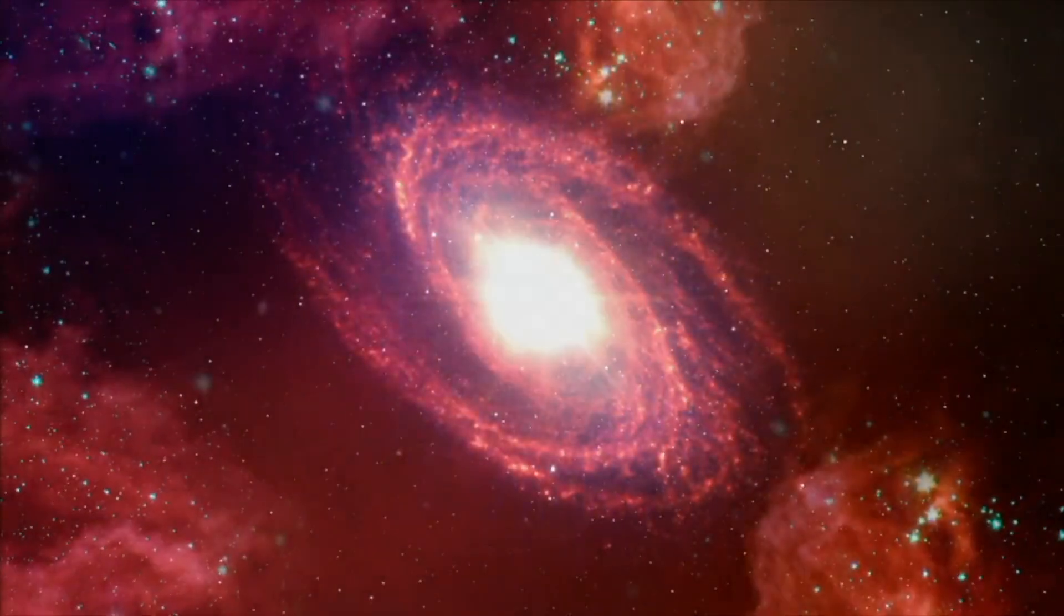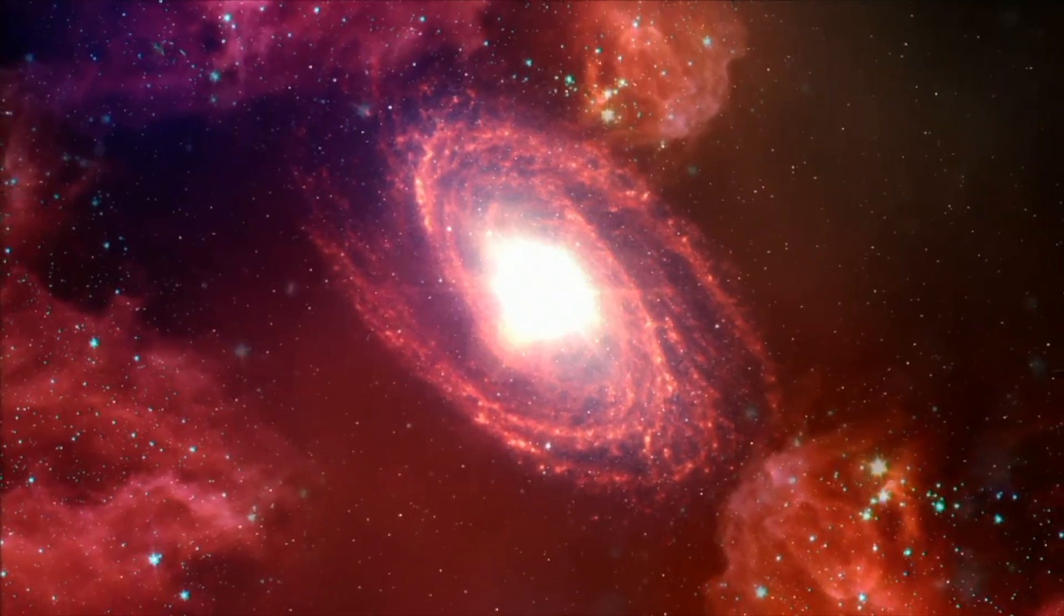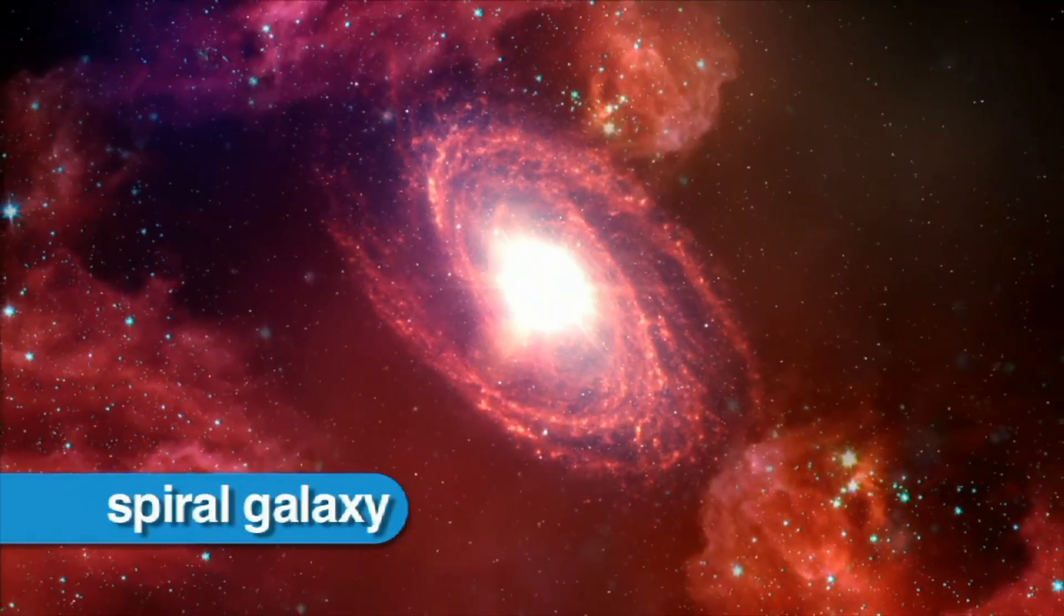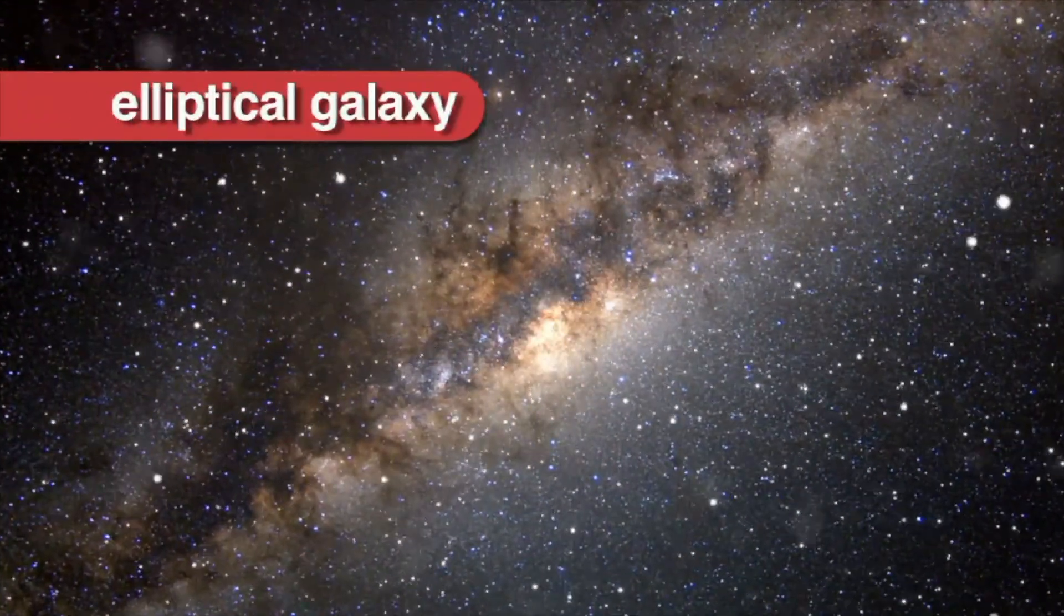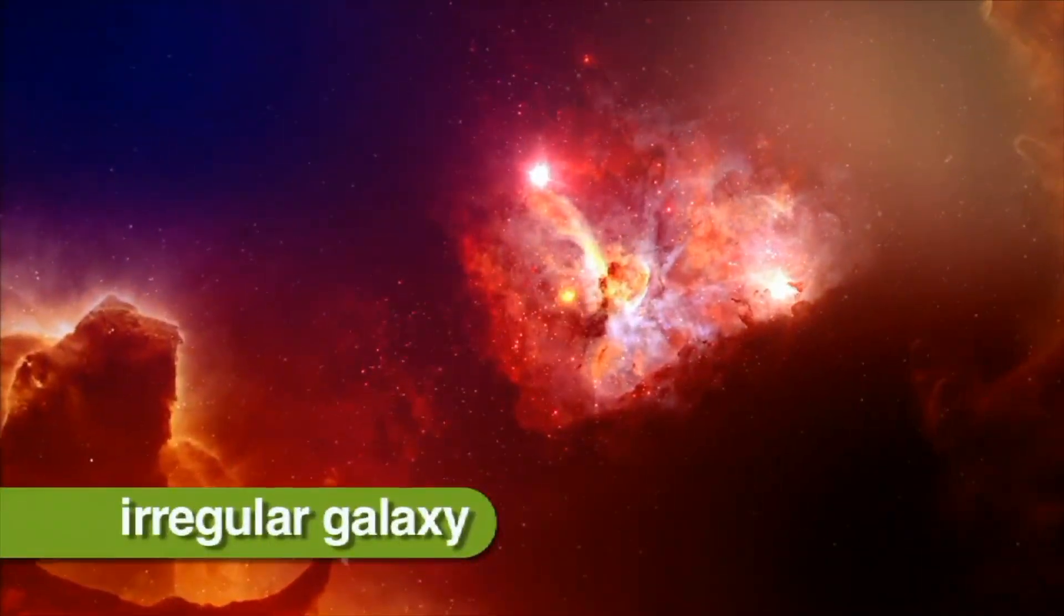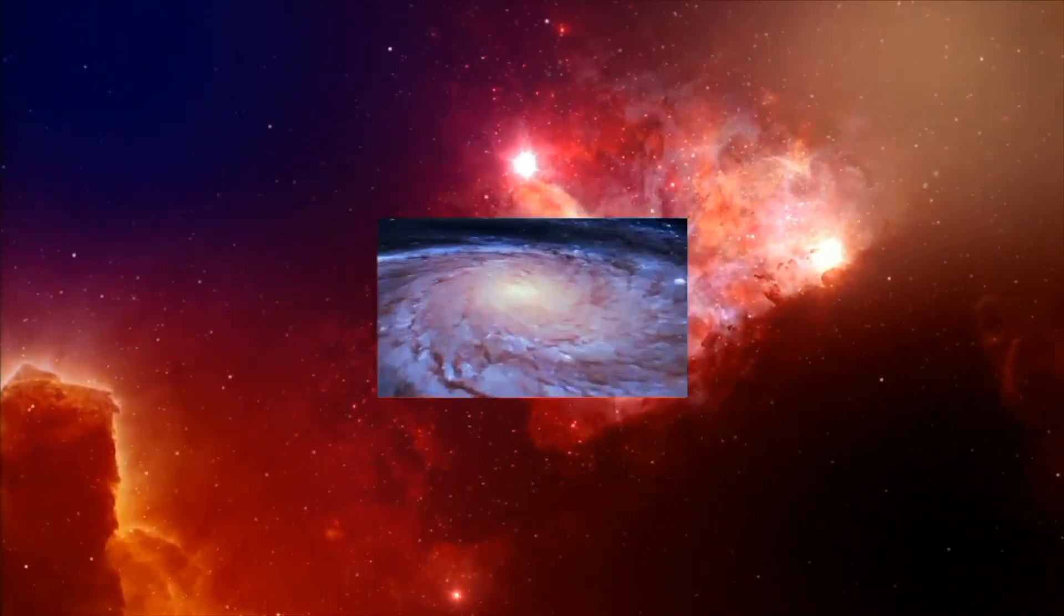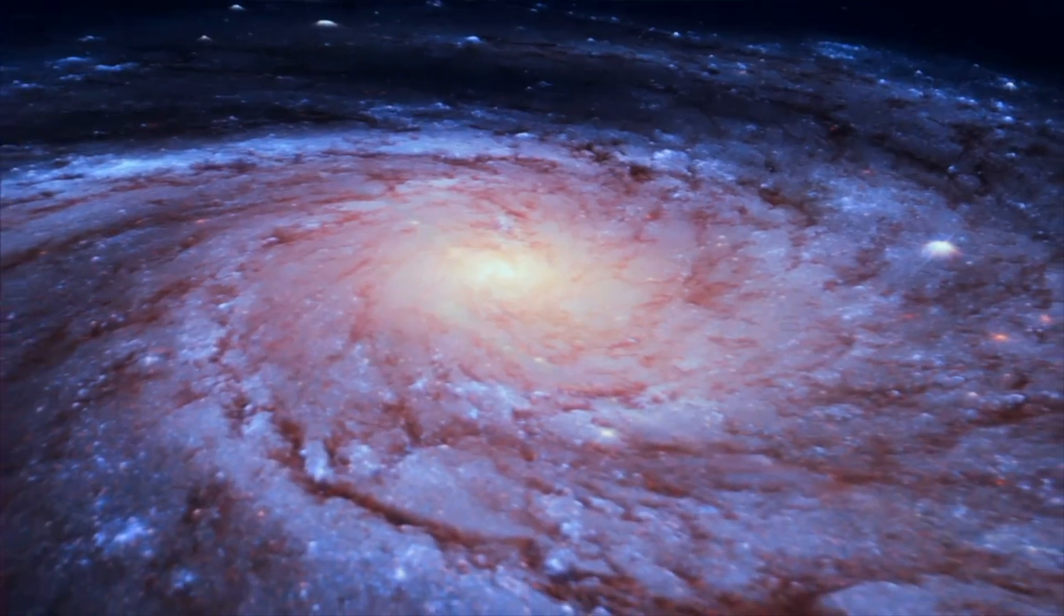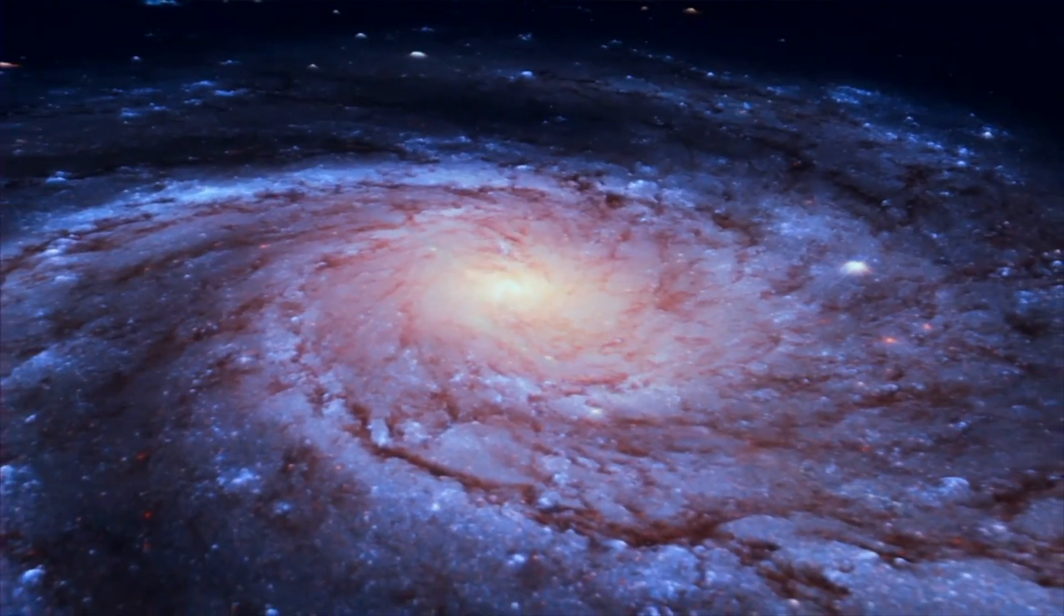Galaxies are divided into three basic types based on their shape: spiral galaxies, elliptical galaxies, and irregular galaxies. In a spiral galaxy, the stars, gas, and dust are gathered in spiral arms that spread outward from the galaxy's center.